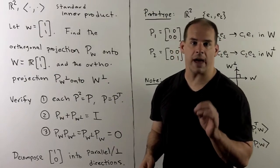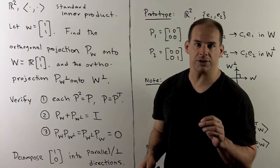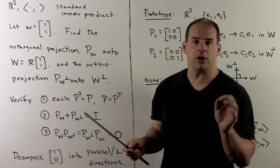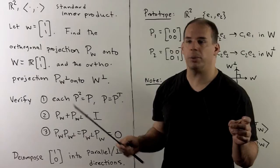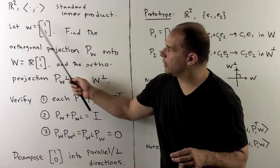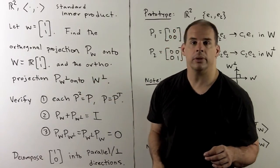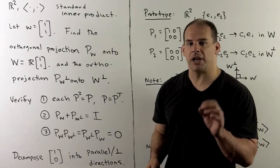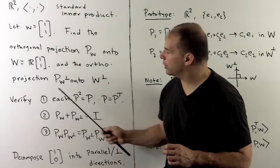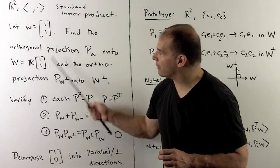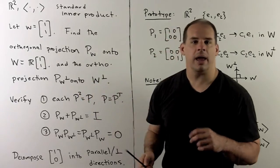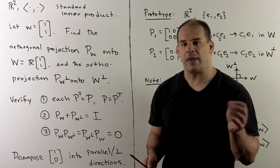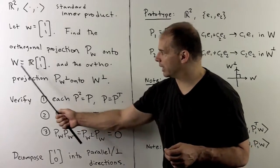Consider the following problem on orthogonal projections. We start with R² with the standard inner product. We pick a vector W equal to (1,1). The problem: find the orthogonal projection P_W onto the span of the vector (1,1), and also find the orthogonal projection onto the orthogonal complement of this subspace.